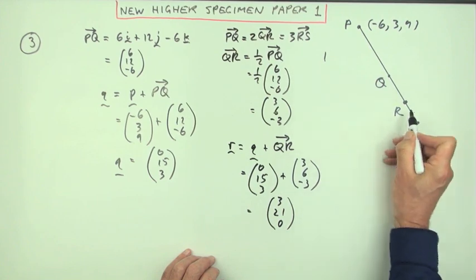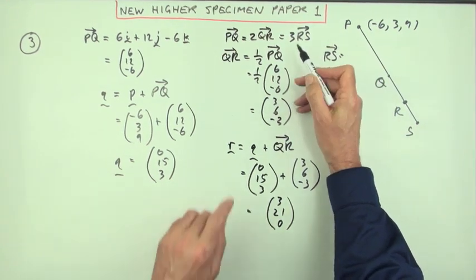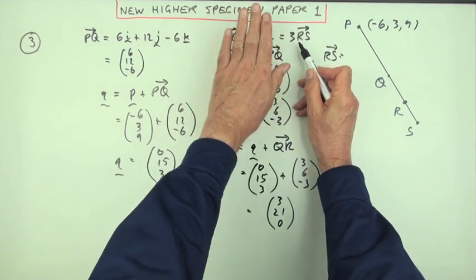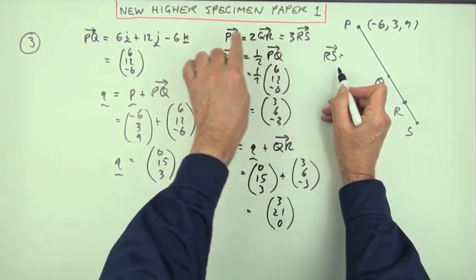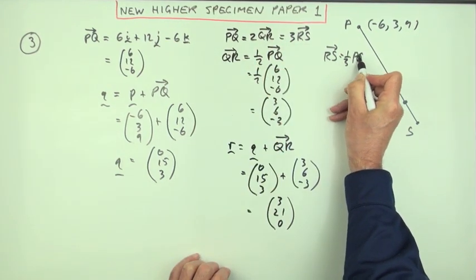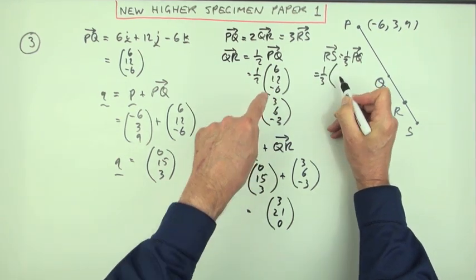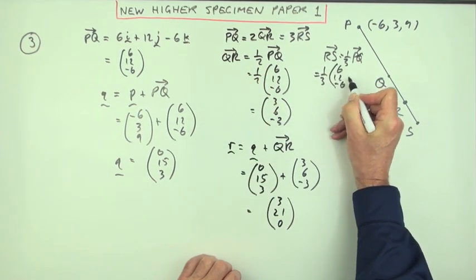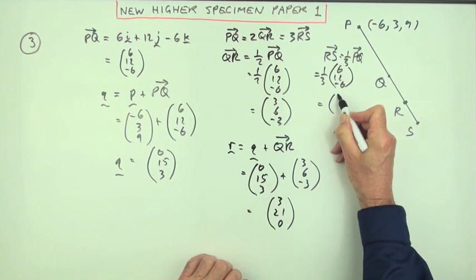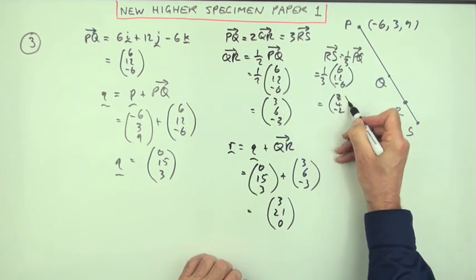Now I'm running out of room a bit. Now I've got to finally make my jump from R to S. What's RS? Well PQ is three times it - don't ignore that, just ignore the middle bit. It's an equation so you can just equate those parts. So RS will be a third of PQ, that means it will be a third of there's the same number, 6, 12, -6, which will be 2, 4, -2.